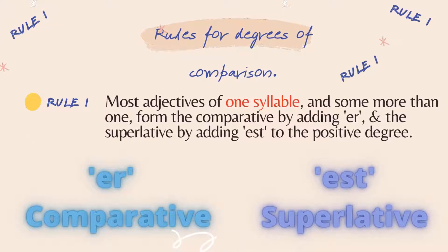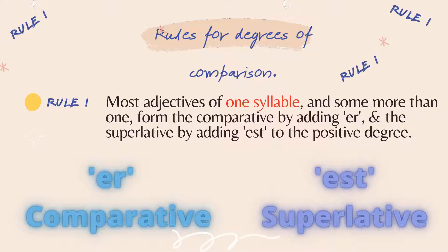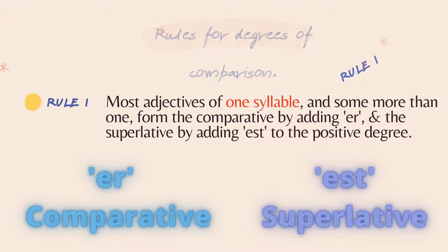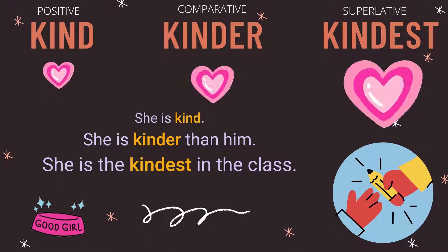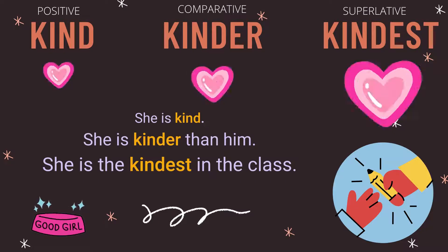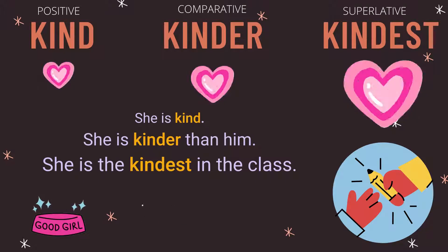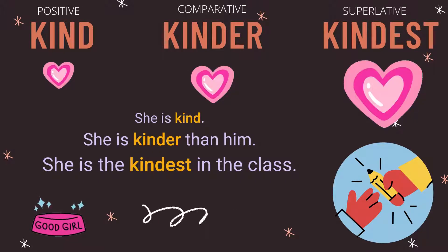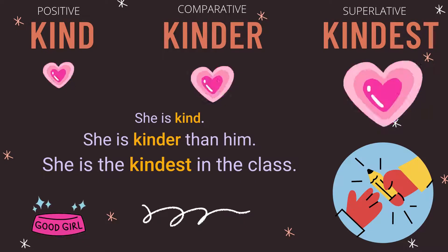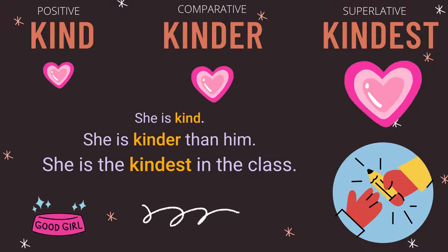Now we are going to see rule number one for degrees of comparison. It is for all one-syllable words — just add 'er' for comparative and 'est' for superlative. Let us see some examples of how to form comparative and superlative for one-syllable words. A one-syllable word is a word that makes a single sound when we pronounce it.